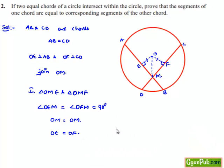Therefore, here by property of RHS congruency, we can say that both the triangles are congruent. That is, triangle OME is congruent to triangle OMF.